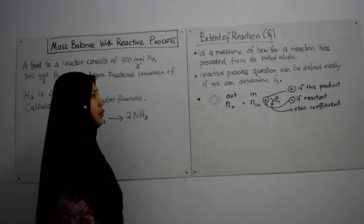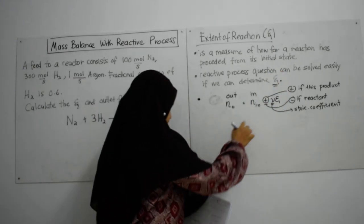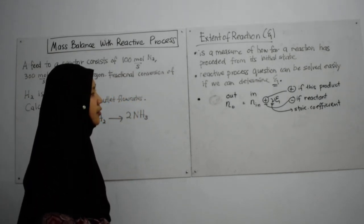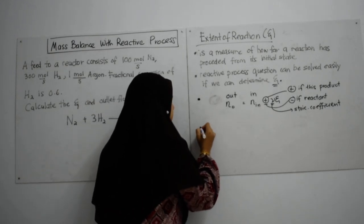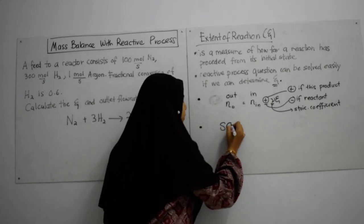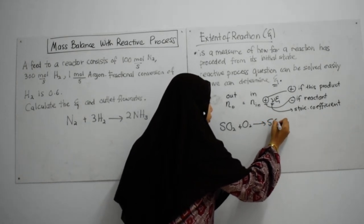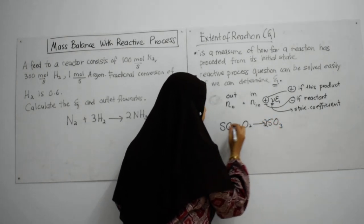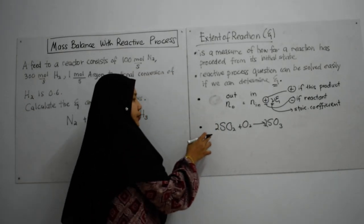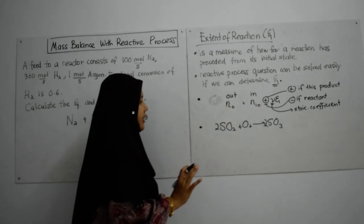So, in order to determine this extent of reaction, this is the basic equation for extent of reaction. For example, remember the question that we have in part 3 and part 4: we have SO2 plus O2 will produce SO3. If you want to find extent of reaction for this process, the equation has to be written like this.